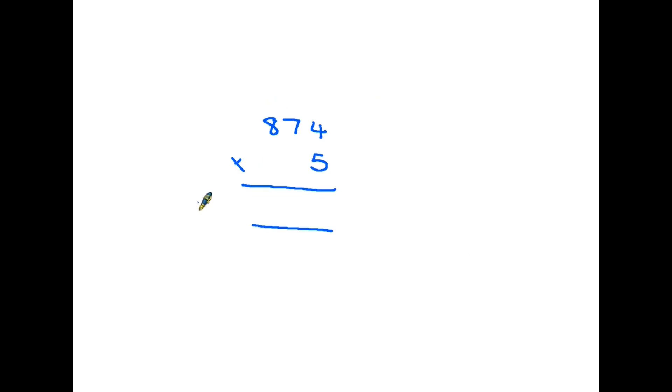Here's a second example which gets a little bit more complicated: we have 874 times 5. Again, one step at a time. The first thing we're going to do is 5 times 4—we start, don't forget, on the right-hand side. 5 times 4 is 20. In this case, we can't put the whole 20 in the column, so we put in the 0 and move the 2 onto the next column to be added on.